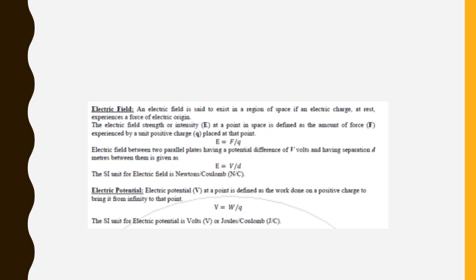If an electric field is present, there must be some potential difference, and the reverse is also true — if we create a potential difference between two plates, there must be some electric field. It is always easier to study the electric field with the parallel plate capacitor as an example.